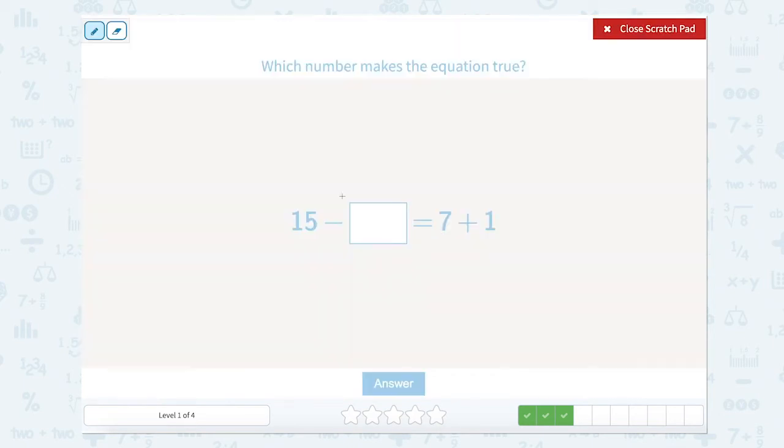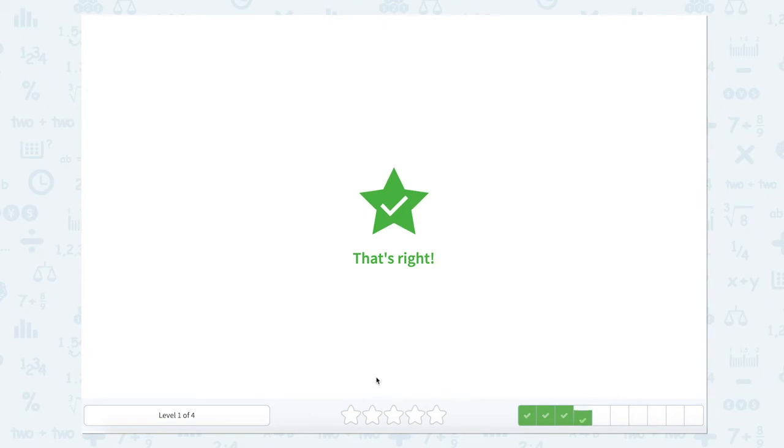Now we're going to do the same thing. We're going to look at the two sides of the equal sign. We have one side here that we don't know and this side here which has two parts. So 7 plus 1 equals 8. So 15 minus something equals 8. Well, I know in the fact family 15, 8 and 7. So 15 minus 7 equals 8. That's right.